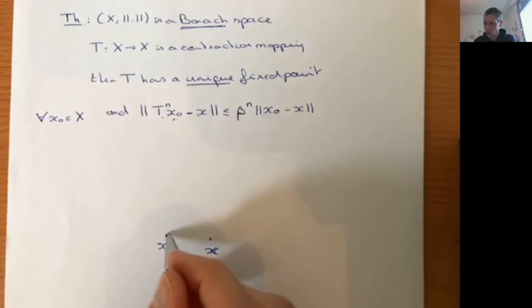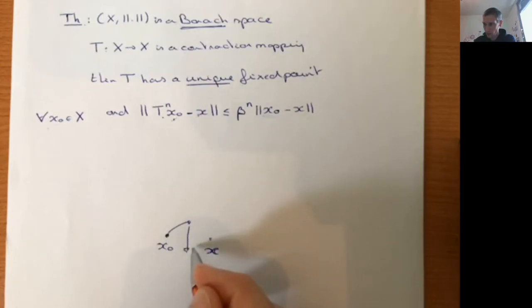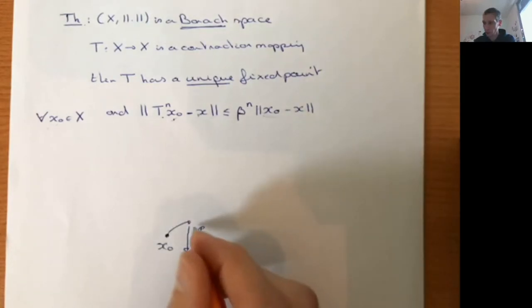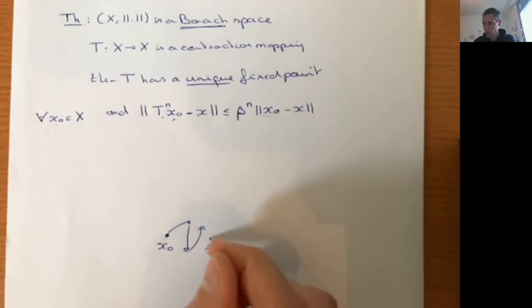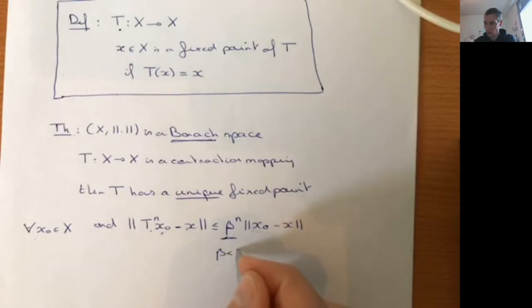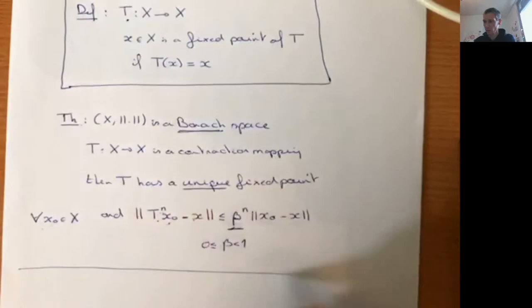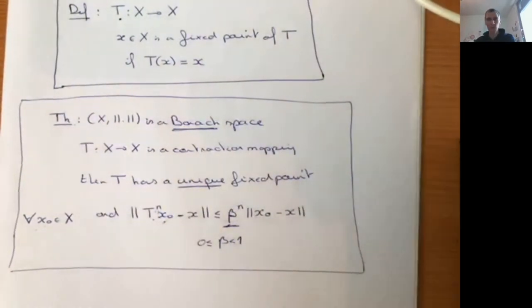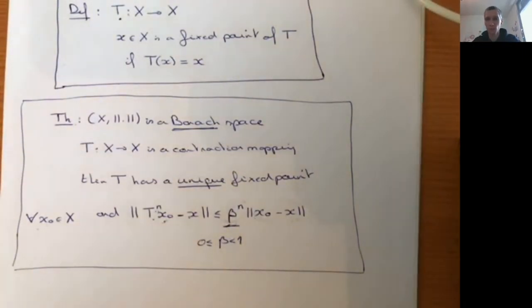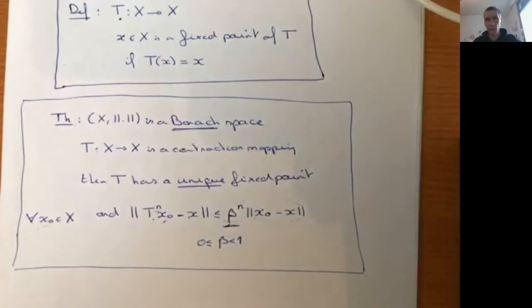So if you start at any point x₀ and iterate the mapping T, the distance to the fixed point shrinks because beta^n goes to 0 as n grows. After n iterations, you get very close to the fixed point. The first part of the theorem tells you a fixed point exists; the second part tells you how to find it — just start anywhere and iterate T.